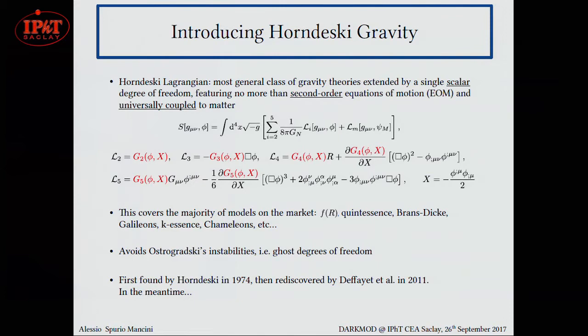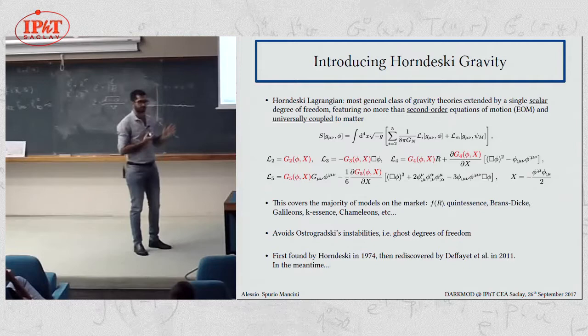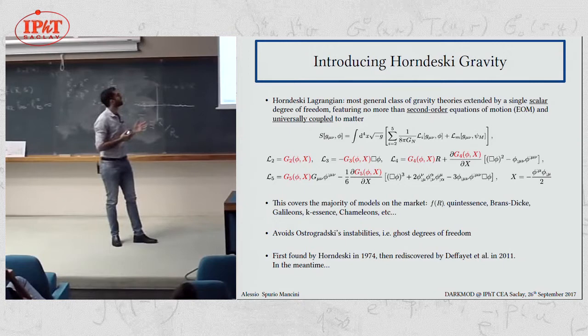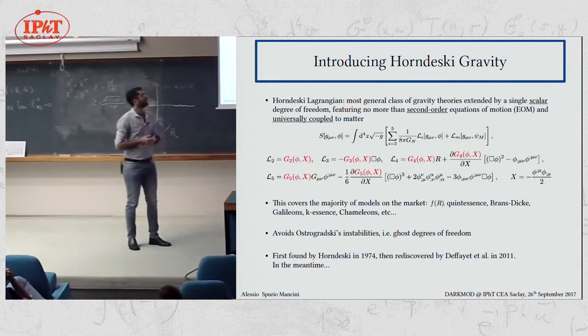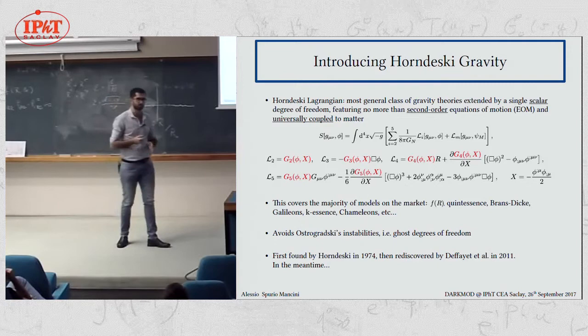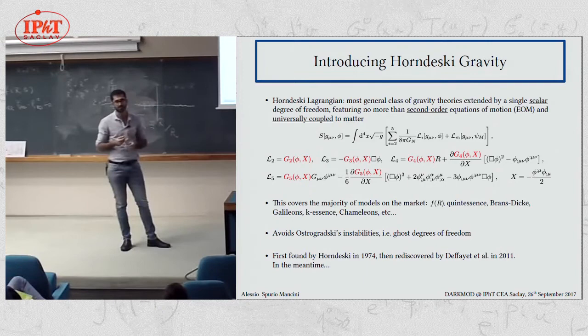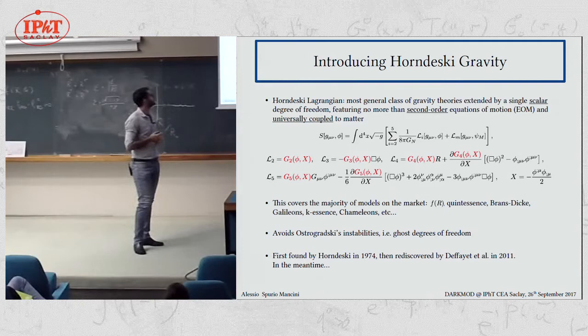Quickly on Horndeski, because we had many talks yesterday, just to fix my notation. We start from the Lagrangian of the Horndeski theories, and we know that this depends on four functions of the extra scalar degree of freedom and its kinetic term, and I highlighted them in red here. Once we specify these functions, we specify the model. And this is the most general class of theories with one extra scalar degree of freedom, which allows us to be sure that we are free from Ostrogradsky instability because we don't have higher order derivatives in the equation of motion, higher than second.